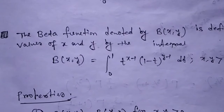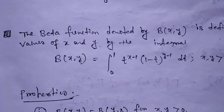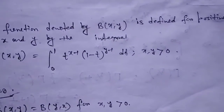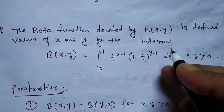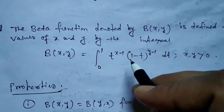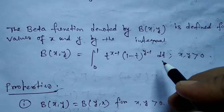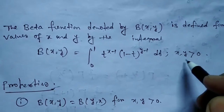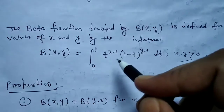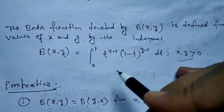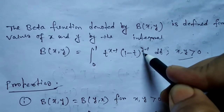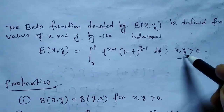Let us define the Beta function. The Beta function is denoted by β(x, y) and is defined for positive values of x and y by the integral: β(x, y) = integration from 0 to 1 of t^(x−1) · (1−t)^(y−1) dt, where x and y must be positive, i.e., x, y greater than 0.